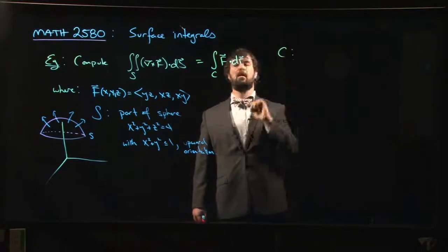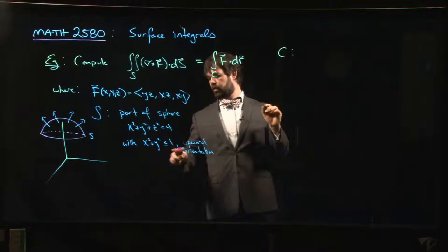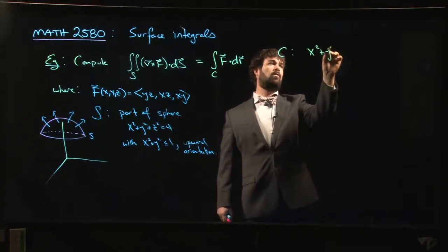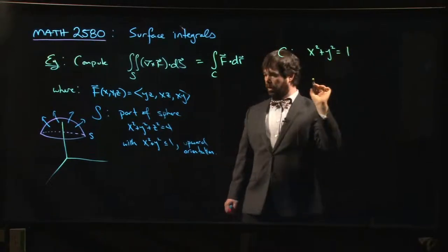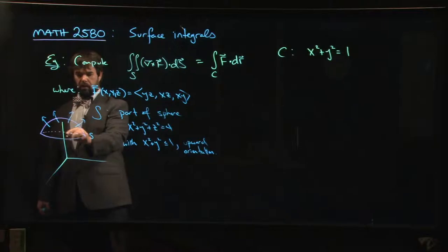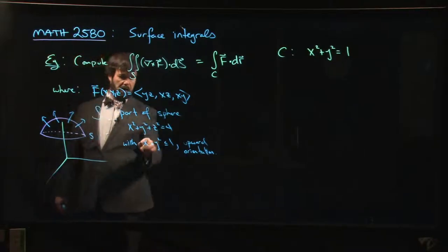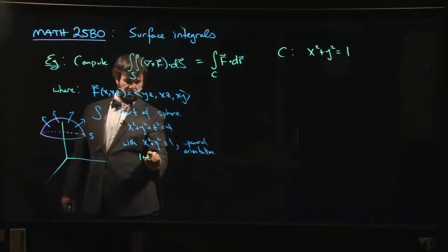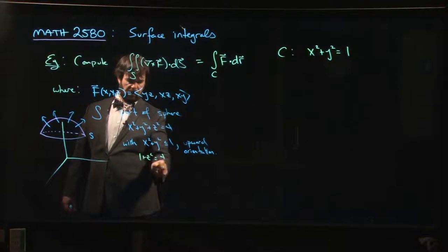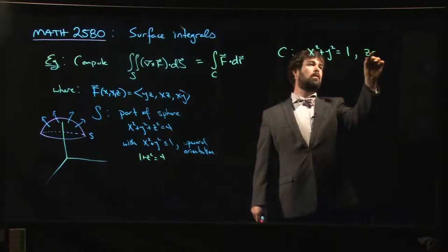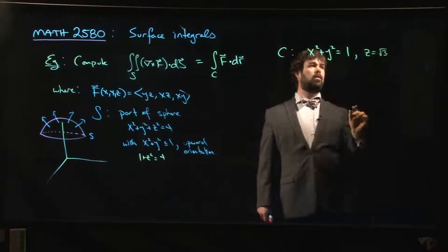So C is going to be the circle x squared plus y squared equals 1. We're on the boundary when we hit the outer limit for the values for x squared plus y squared. So x squared plus y squared equals 1, and if x squared plus y equals 1, then 1 plus z squared would equal 4, so z squared is 3, so z here would have to be equal to root 3.